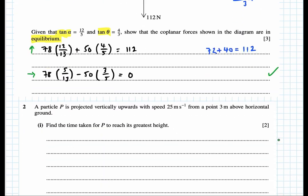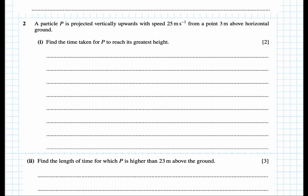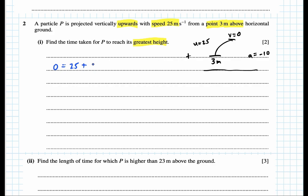Question two: a particle P is projected vertically upwards with a speed from a point above the horizontal. We need to find the time taken for P to reach its greatest height — remember the greatest height means velocity equals zero. Initial velocity u is 25, we're 3 meters above the ground, and acceleration is −10. Using v = u + at, we get t = 2.5 seconds.